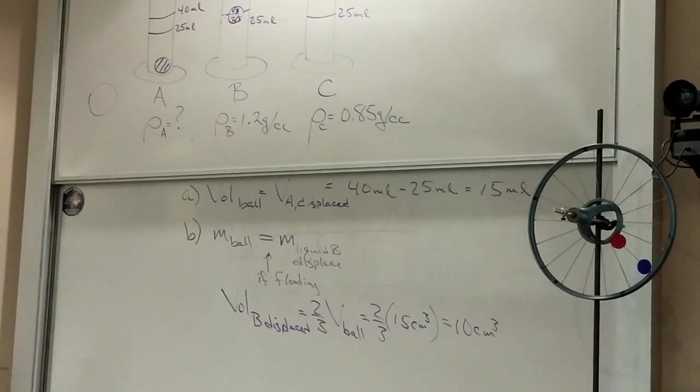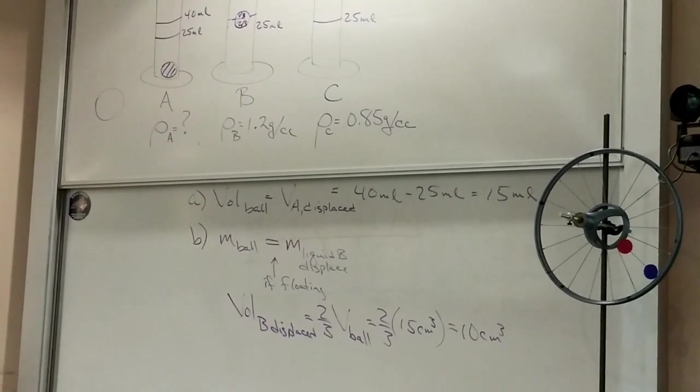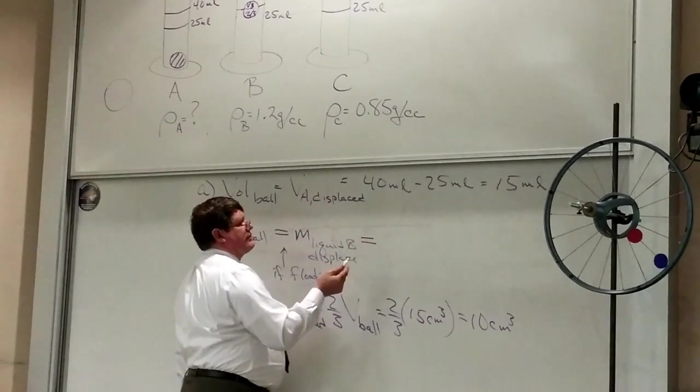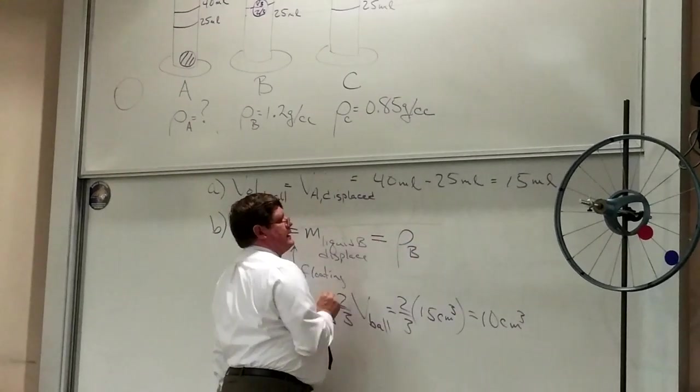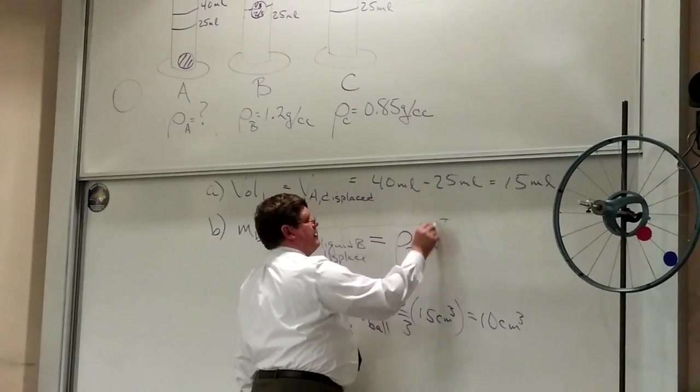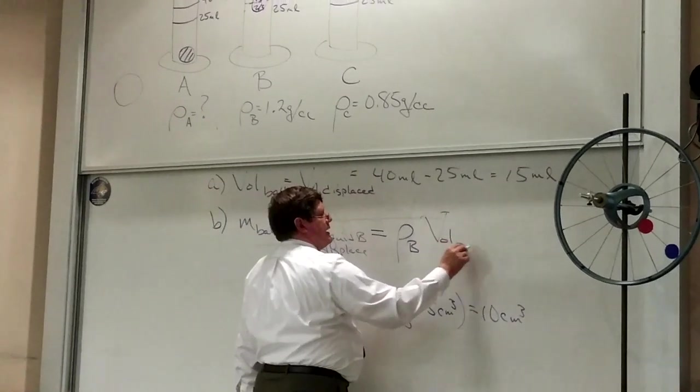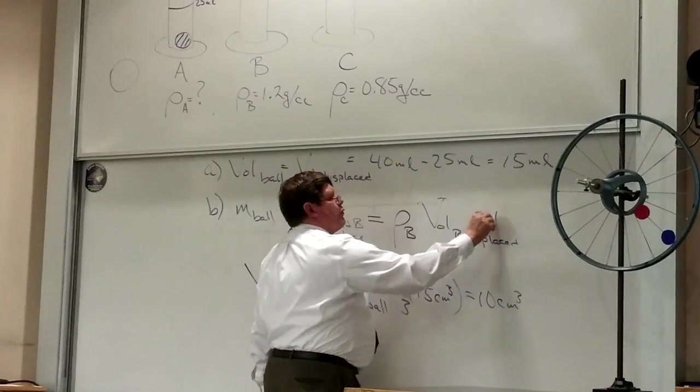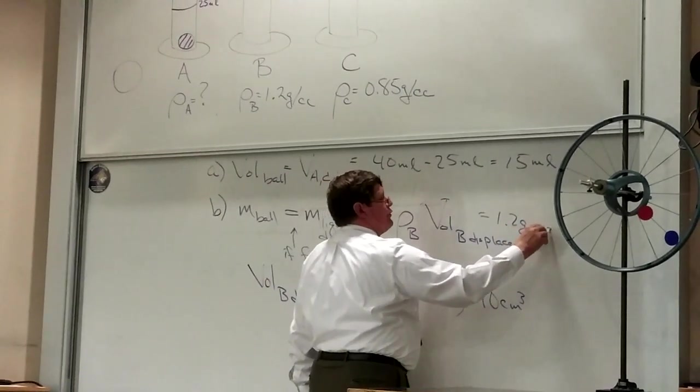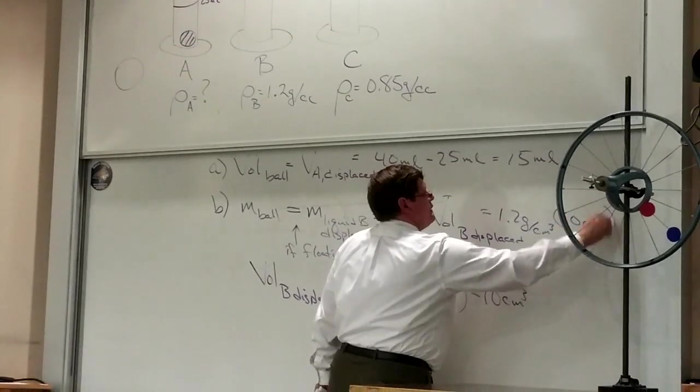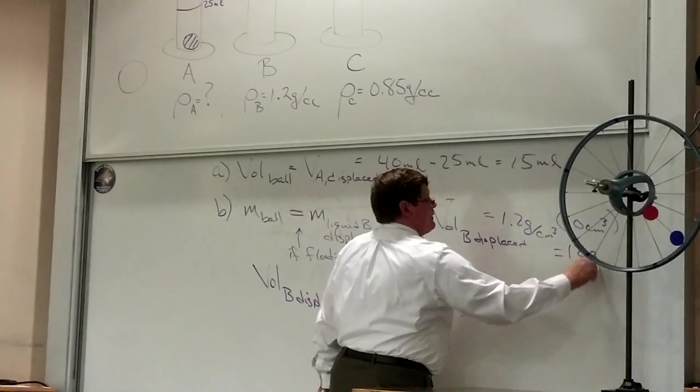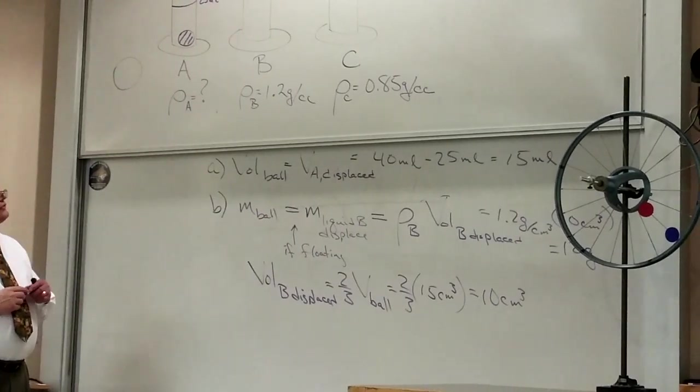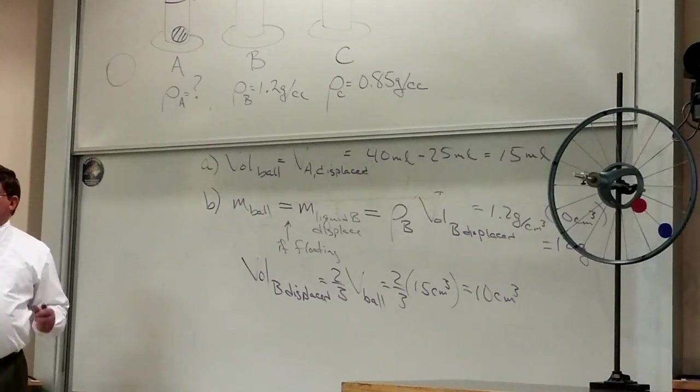Now there's two ways to find the mass of the ball. One is to say the mass of liquid B displaced is the density of liquid B times the volume of liquid B displaced. That's going to be 1.2 grams for every centimeter cubed times 10 centimeters cubed or 12 grams. Now the other way to do it is to say, hey, let's use the iceberg approach.